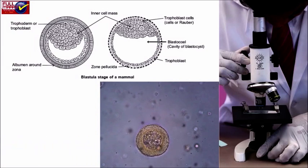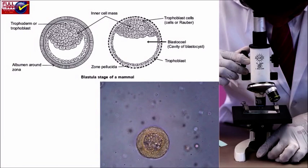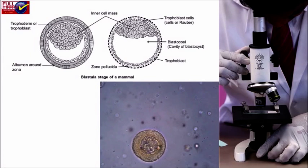One, an outer envelope of cells called trophoblast, and two, inner cell mass or embryoblast.